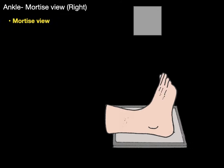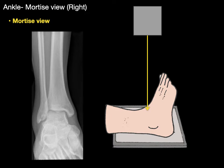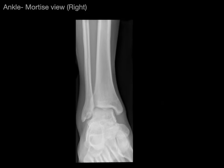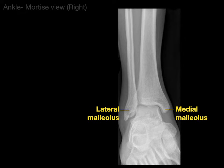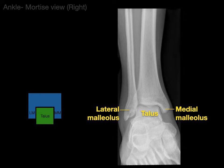Now let's do a mortise view. What that means is when the foot is just medially rotated where the great toe points a little bit more in when the x-ray is taken. It gives a view which is similar but provides a much greater view of the mortise joint, which is a combination of our lateral malleolus, medial malleolus, and the talus. Here you can see the mortise joint where the LM and MM are the lateral and medial malleoli.